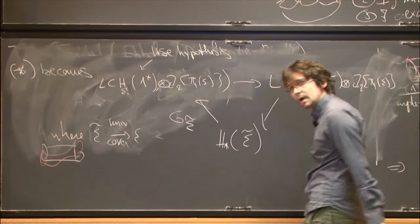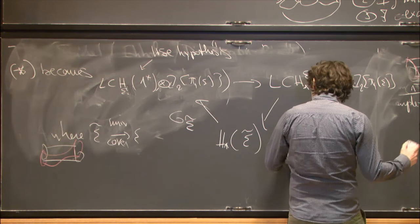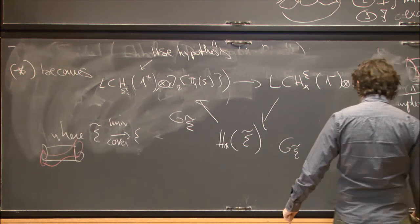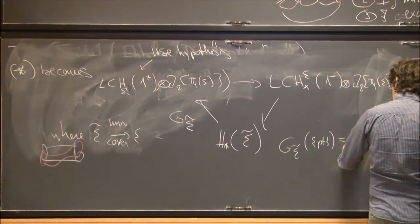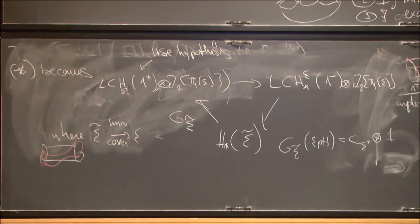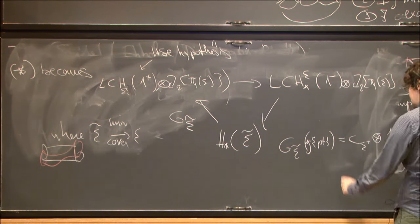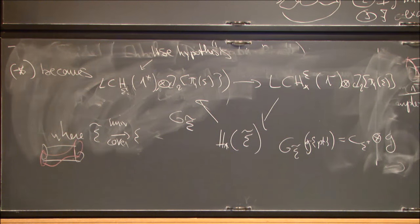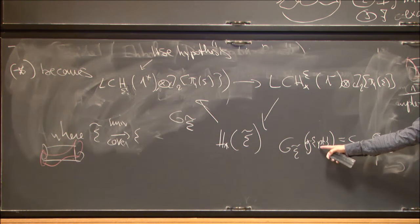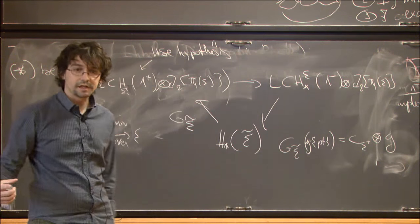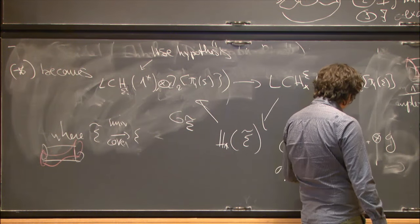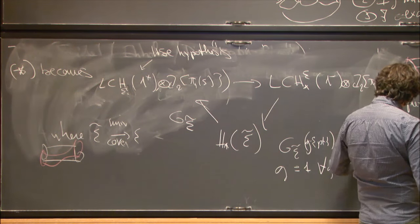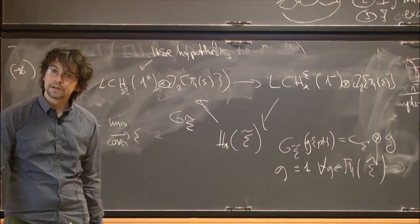The map G̃_Σ, for the same reason as before — playing explicitly with which holomorphic curves are involved — sends the point to C_{ε⁺} ⊗ 1, and it is a G-equivariant map. So G times the point equals that times G. But there is only one point in the homology of Σ̃ (since Σ̃ is connected), which means G = 1 for any G in π₁(Σ). Therefore Σ̃ is simply connected.